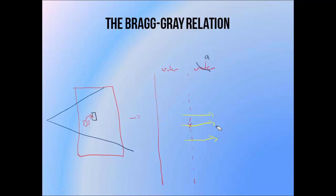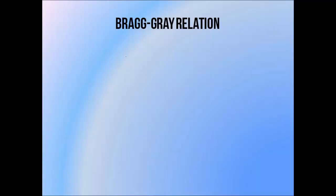When we replace the water below this point with an ionisation chamber — so with a volume of air — it changes how these secondary electrons behave. They'll travel further through air than they would through water, and they'll lose a different amount of energy. The purpose of the Bragg-Gray relation is to allow us to use the amount of energy measured in this region of air to work out how much is being deposited at the point at which we wish to know the dose.